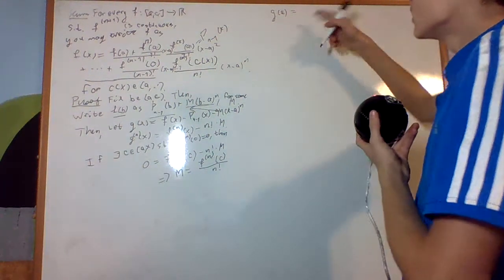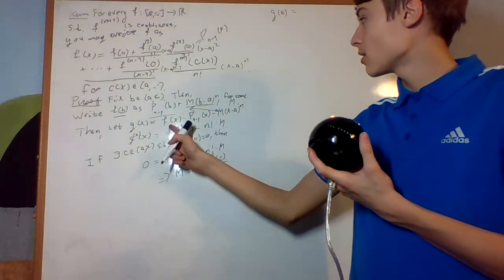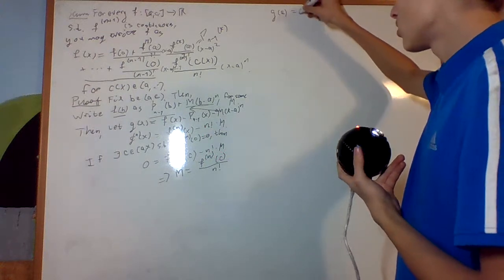So, g of a is going to be 0, because that's going to be f of a minus f of a minus 0. So, that's 0.